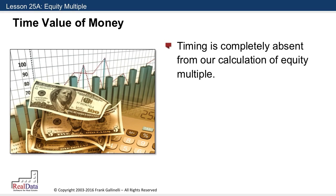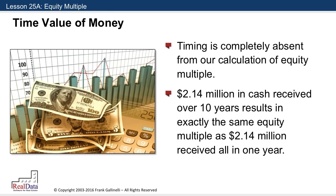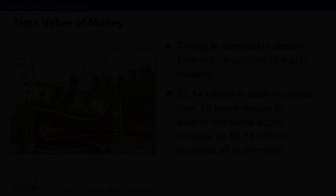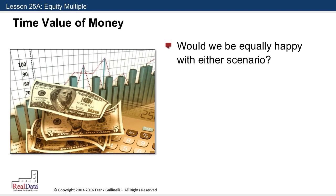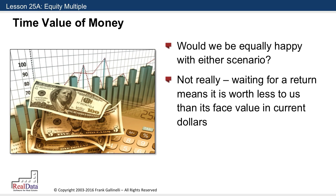Timing is completely absent from our calculation of equity multiple. $2.14 million dollars in cash received over 10 years results in exactly the same equity multiple as $2.14 million dollars received all in one year. Now, would we be equally happy with either scenario? Not really — not if we believe in the time value of money, because waiting for that future return means it's worth less to us than its face value in current dollars.